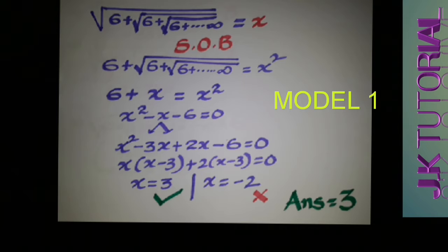We get the equation x squared minus x minus 6 equals 0. Doing factorization, we get x squared minus 3x plus 2x minus 6 equals 0, giving x equals 3 and x equals minus 2. We take only the positive value, so x equals 3.